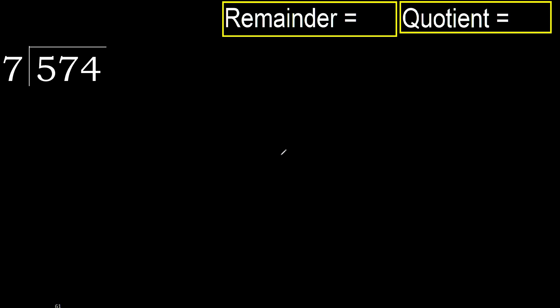574 divided by 7. 5 is less, therefore next. 57 is not less, therefore we work with 57.